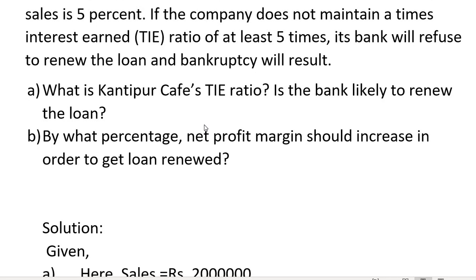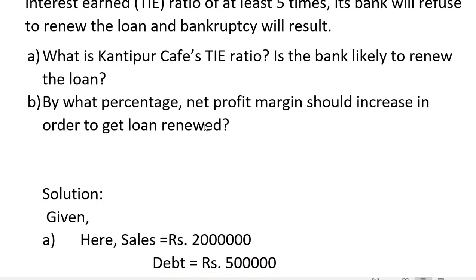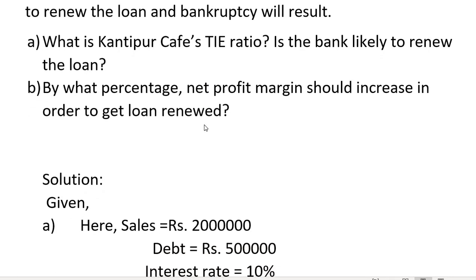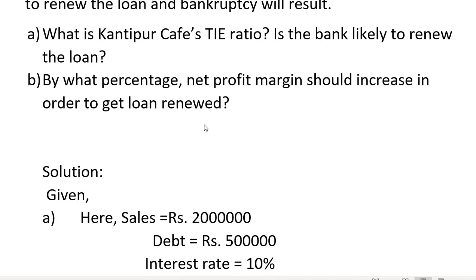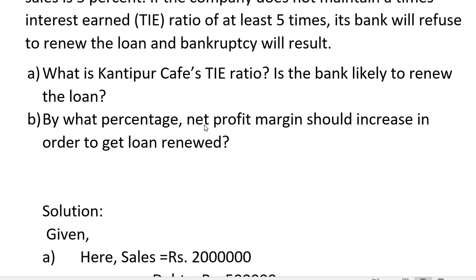The bank will refuse to renew the loan if the TIE ratio condition is not met. Now we are going to show you: what is Kanthipur Cafe's TIE ratio? Is the bank likely to renew the loan? And by what percentage should net profit margin increase in order to get the loan renewed?